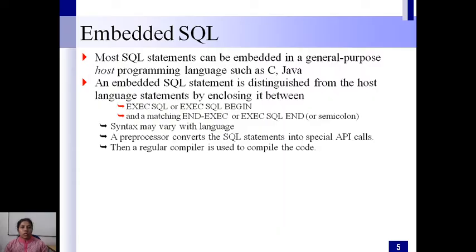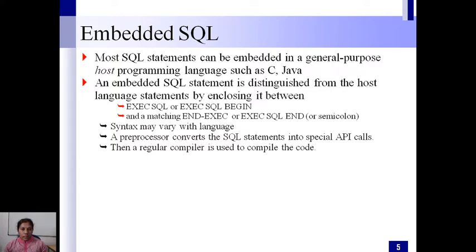A preprocessor converts the SQL statements into special API calls so they can be executed and access the database. The preprocessor converts those SQL statements to database calls, which are called APIs. Then the regular compiler — for example, the C compiler — is used to compile the statements written in the general-purpose programming language. So the preprocessor converts SQL statements to APIs, and the regular compiler handles the host language statements.